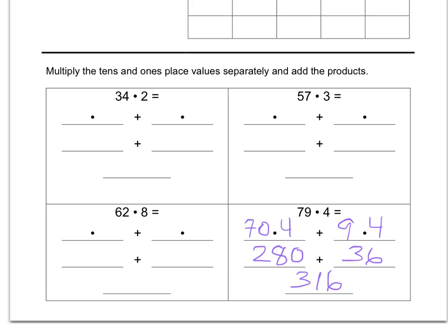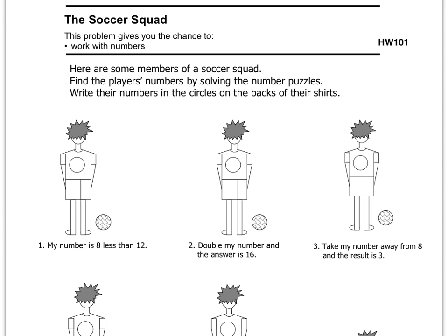Okay, let's move on to the back side. Okay, here we are on the back side and we're working on the soccer squad. Here are some members of a soccer squad. Find the players' numbers by solving the number puzzles. Write their numbers in the circles on the backs of their shirts. I'll do one of these for you here.